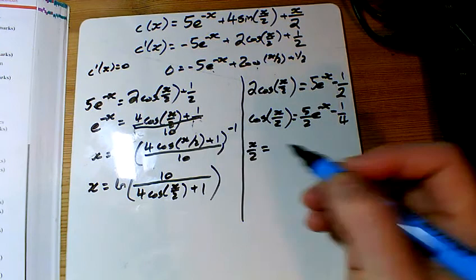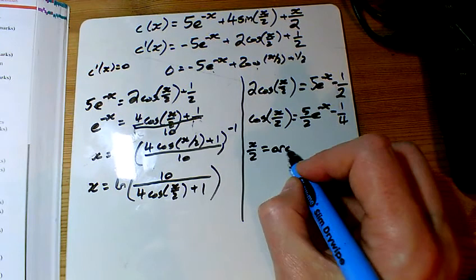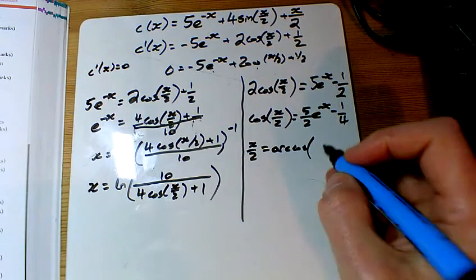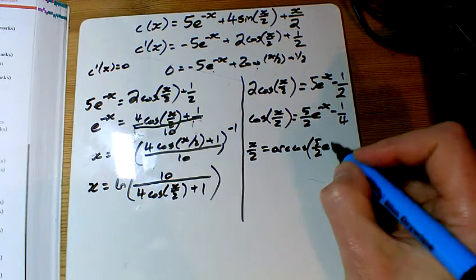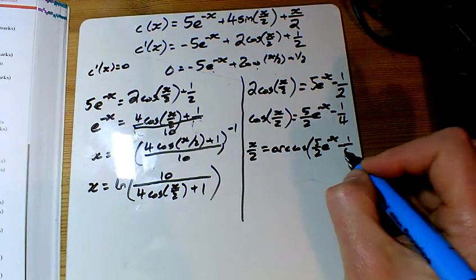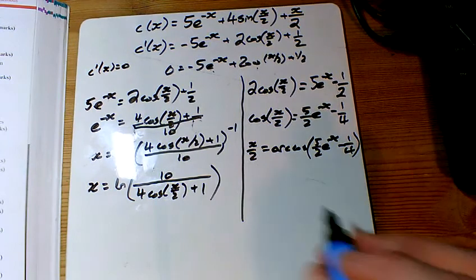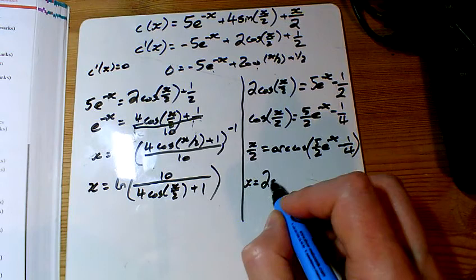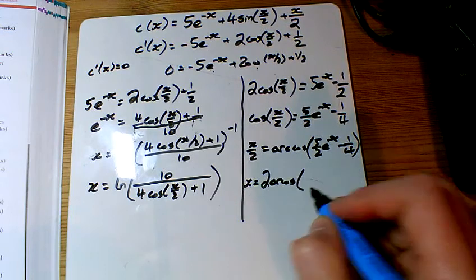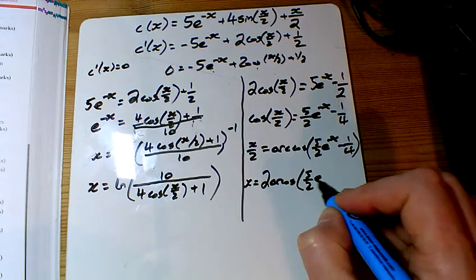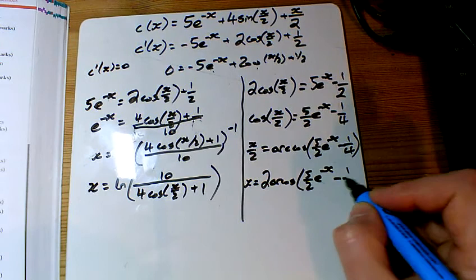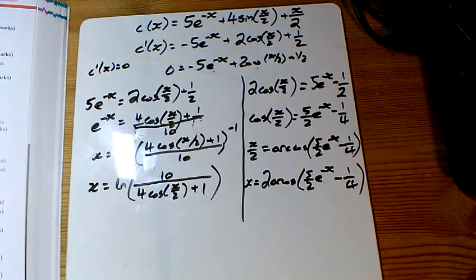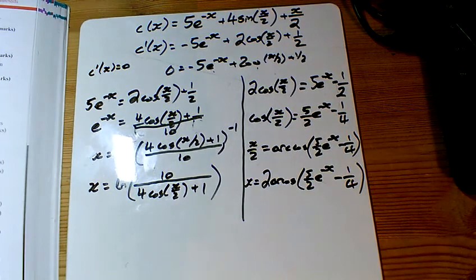Now inverse cos, the posh inverse cos is arc cos. 5 over 2 e to the minus x minus a quarter. That's exactly what they wanted. And then just times it by 2. So x equals 2 arc cos, 5 over 2 e to the minus x minus a quarter. So there's the two different rearrangements that they were asking us for.